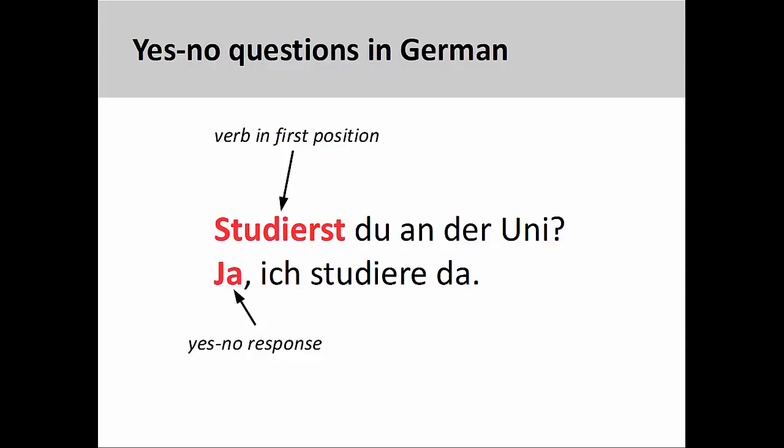Any conjugated verb can appear in the first position, not just some form of sein. For example, in the sentence you see on the screen, studierst du an der Uni? Do you study at the university? A second-person singular form of studieren is in the first position, which creates subject-verb agreement with the subject du, second-person singular personal pronoun.